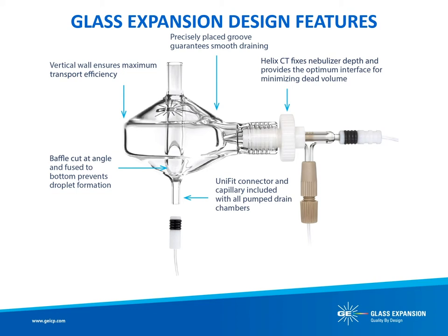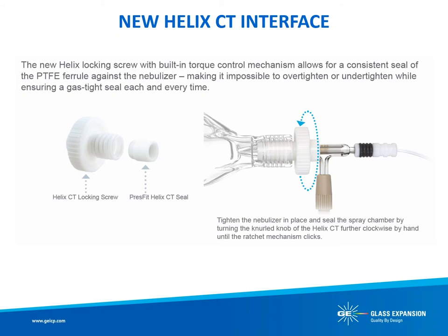With our double-pass cyclonic designs, the Twister and Twinibar, the knockout tube or baffle is cut at an angle and carefully positioned to maximize transport of the aerosol but minimize or eliminate transport of large droplets to the plasma. The Helix CT fitting is carefully designed to fix the depth of penetration and the torque on the nebulizer seal so that the aerosol produced is optimal. All pumped cyclonic spray chambers include our Unifit connector and cap array for smooth and efficient draining. Glass Expansion's new Helix CT locking screw with built-in torque control mechanism was released in 2018.